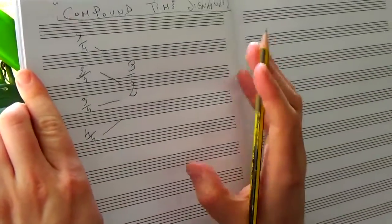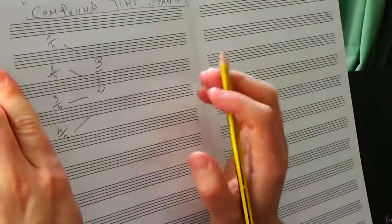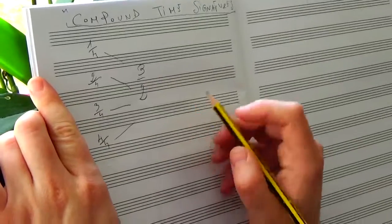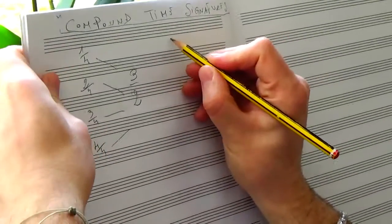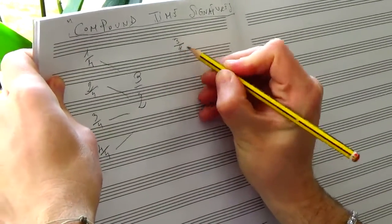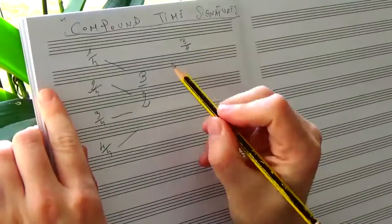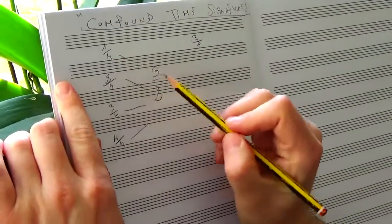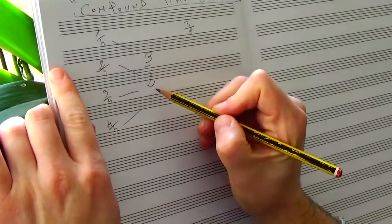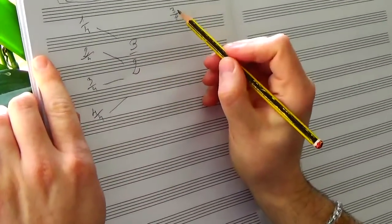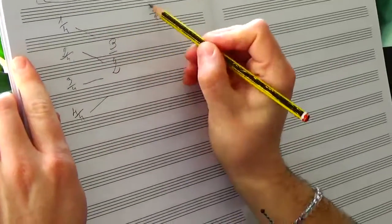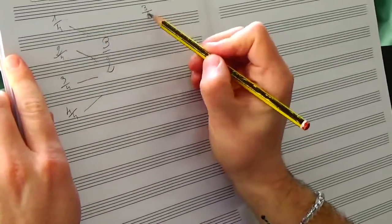That's why I placed 3 over 2 here exactly in the middle, because one of the first compound time signatures that you will face is the one that is 3 over 8, 3 eighth. Indeed, if you multiply 1 fourth by 3 over 2, you will notice that 3 times 1 is 3, 4 times 2 is 8.